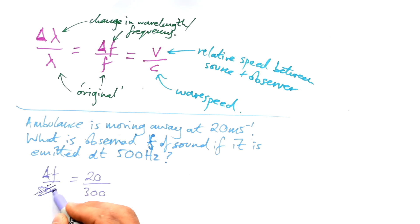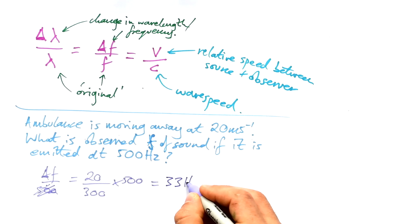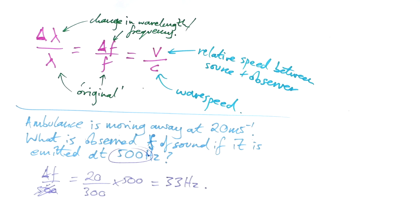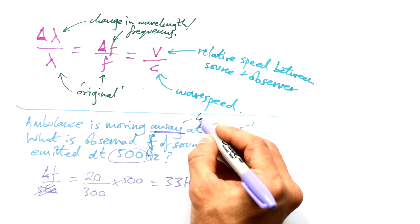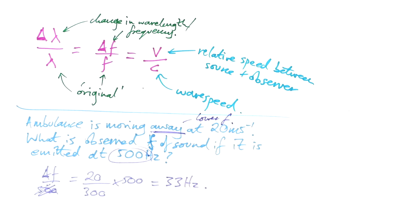So if I want the change in frequency, then I need to times this side by 500, and that gives me 33 hertz. But of course that is not the new frequency of the sound that we hear, that is the difference. So we've now got to think, is it going to be 33 hertz higher than the 500 or 33 hertz lower? Well of course it is moving away from us, so that means that it's going to be a lower frequency. So therefore 500 take away 33 and that gives us 467 hertz. That is the new frequency that we hear of the ambulance siren. What would it be if it was coming towards us? It would just be 500 plus 33 instead.